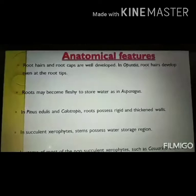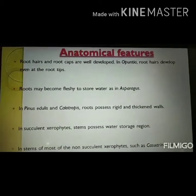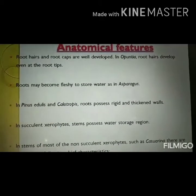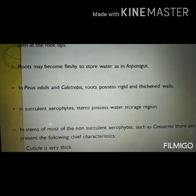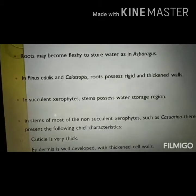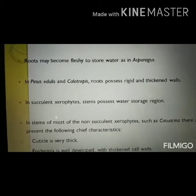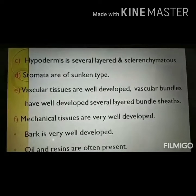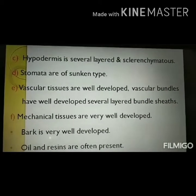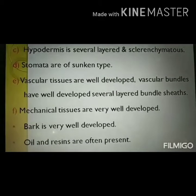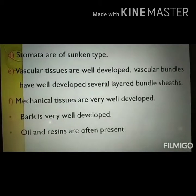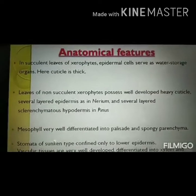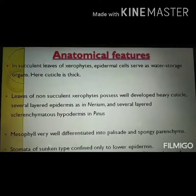Anatomically, in the cross-section of xerophyte roots, root hairs and root caps are well developed. Roots may be fleshy, storing water as in Asparagus, where the root is modified into small tuber-like structures. The hypodermis consists of several layers of sclerenchyma. Stomata are sunken in nature. Plants have thus adopted various anatomical structures to overcome xeric conditions.